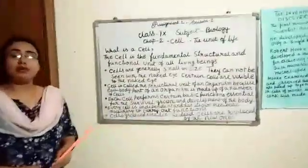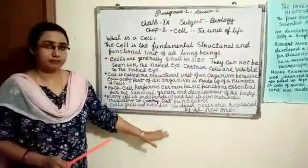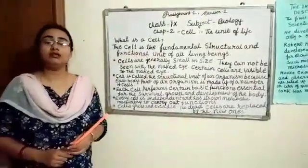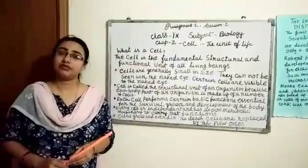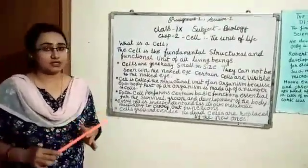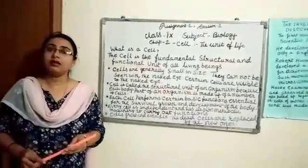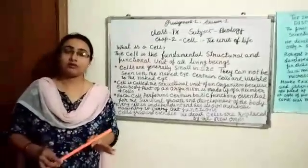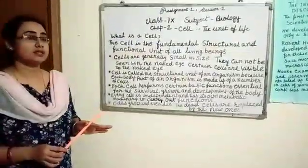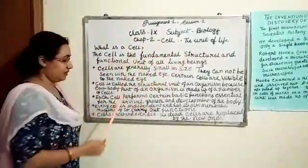Cells make the body of an organism just like the bricks form a building. Every organ in our body — the brain, the skin, the muscles, or even the bone — is composed of hundreds of thousands of such cells. Similarly, the parts of a plant — the leaf, the flower, the root, or even the wood — is composed of many cells. So, cell is called the structural unit of all living beings.